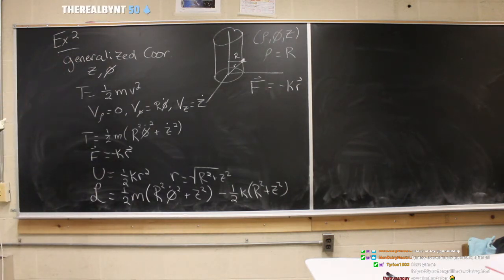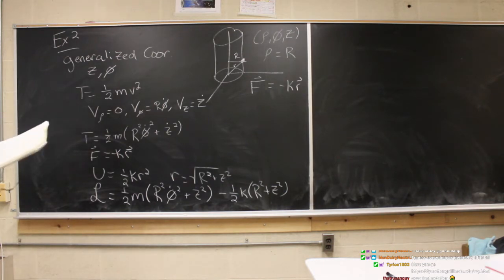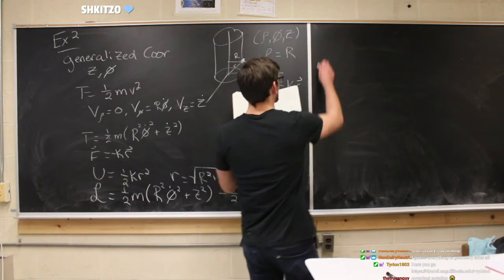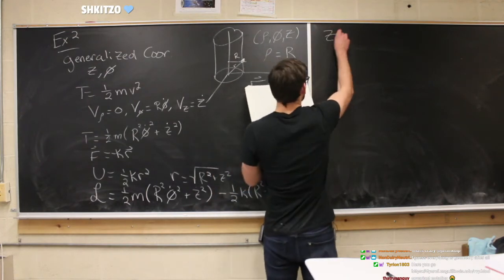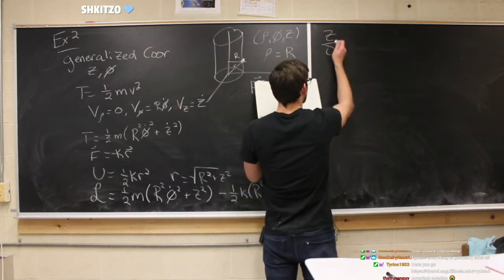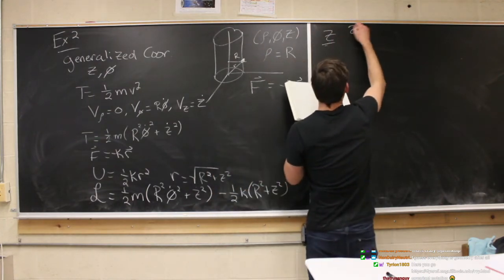We have two degrees of freedom and two generalized coordinates, z and phi, so we're going to derive two equations of motion. For z, we'll write out the Euler-Lagrange equation.